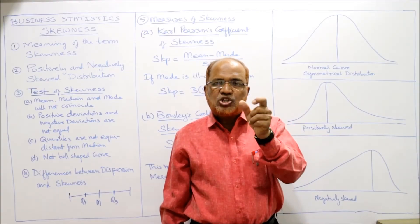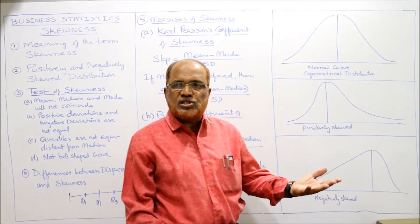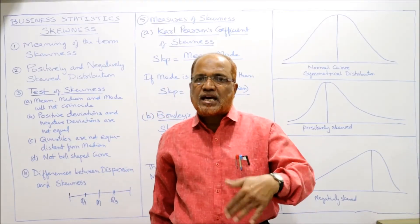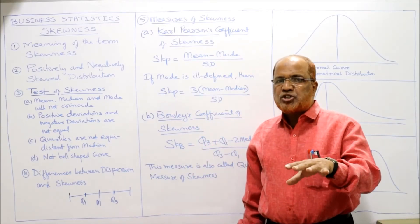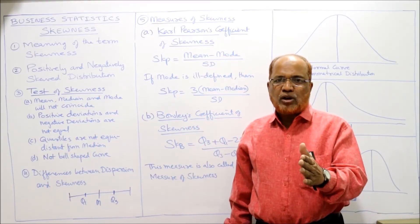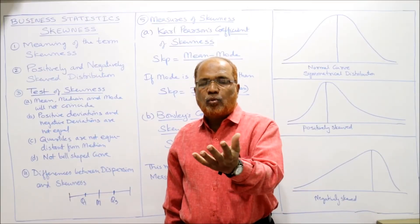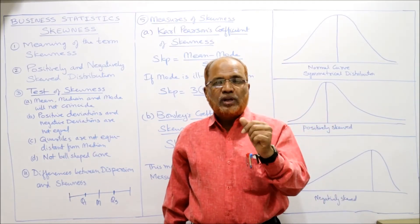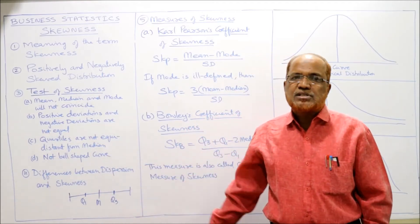Skewness is a technique that explains the shape of the distribution — whether it is positively skewed, negatively skewed, or unskewed (no skewness, symmetrical). The measure of dispersion depends on the calculation of central tendency — to calculate dispersion you must know how to calculate mean, median, and mode. Whereas for calculating skewness, you need both the measure of central tendency and the measure of dispersion. Both are used together to calculate skewness.